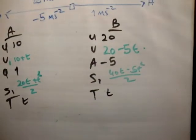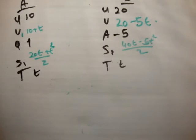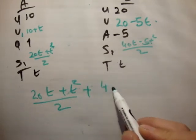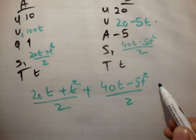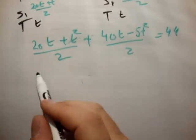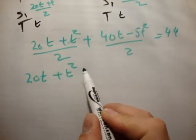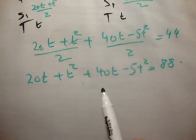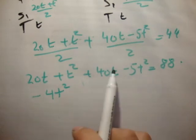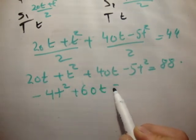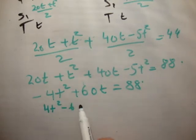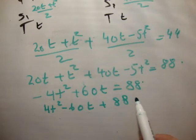So, now what we do is we apply our condition. That S1 plus S2 is equal to 44. So, you have 20T plus T squared over 2. That's S1 plus S2 which is 40T minus 5T squared over 2 is equal to 44. Multiply across by 2. You have 20T plus T squared plus 40T minus 5T squared is equal to 88. Add everything that's got a square. So, that's minus 4T squared. Add everything that has got a T plus 60T is equal to 88. And you always want to rearrange this so that you have plus 4T squared. So, that's actually 4T squared minus 60T plus 88 is equal to 0. So, we're doing okay.